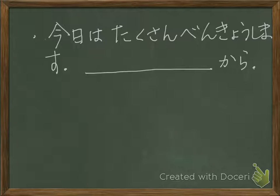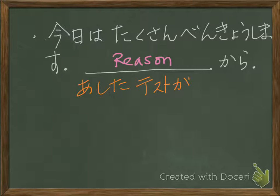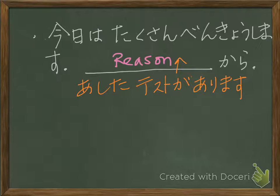Today I study a lot: 今日は、たくさん、勉強します。 Why? You add the reason — something から. You can say 明日、テストがあります — 'Tomorrow I have a test' — and add から to give the reason. So the full sentence becomes: 明日、テストがありますから、今日は、たくさん、勉強します。